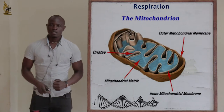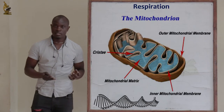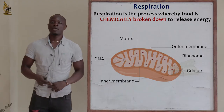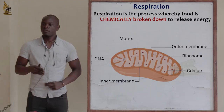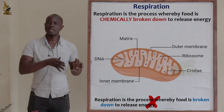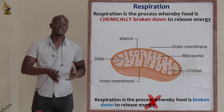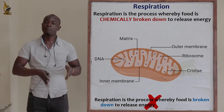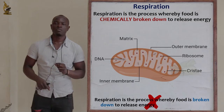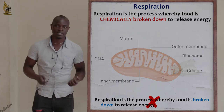Hello and welcome to this class. Today we want to study about respiration. Simply, respiration is the process whereby food is chemically broken down in the body to release energy. In the definition for respiration, never say that food is only broken down — you must be specific. Food is chemically broken down in the body in order to release energy, because during digestion food is also chemically and mechanically broken down, and that is not respiration.